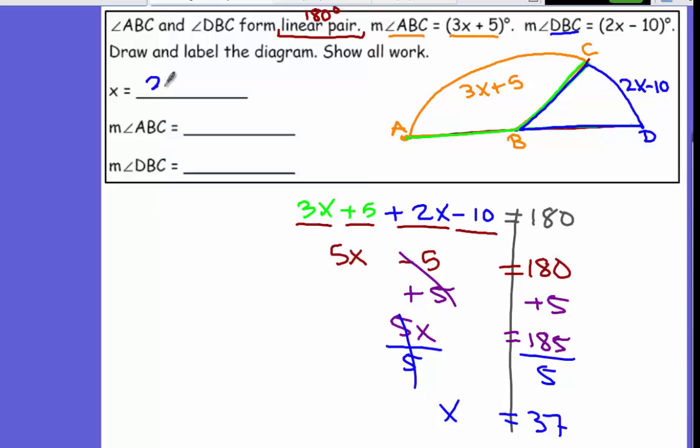Which means this is 37, not 37 degrees, just the value 37. Now we are looking for angle ABC. ABC is 3X plus 5, that's 3 times 37 plus 5. 116 degrees. And this right here is 2 times 37 minus 10, that's going to give you 64 degrees.